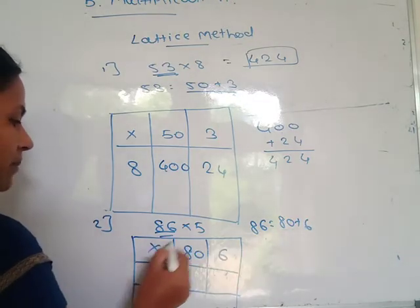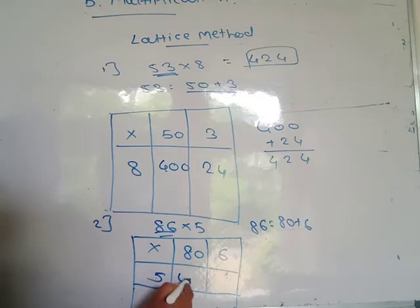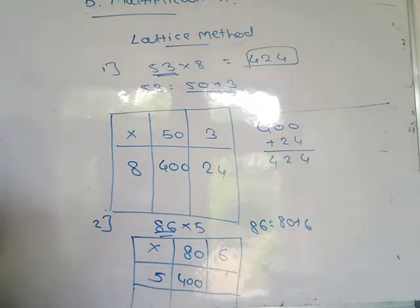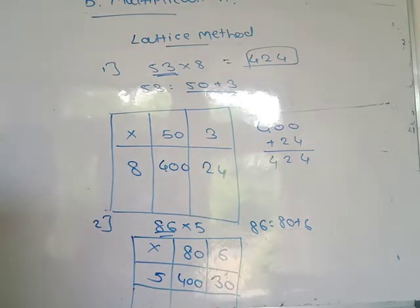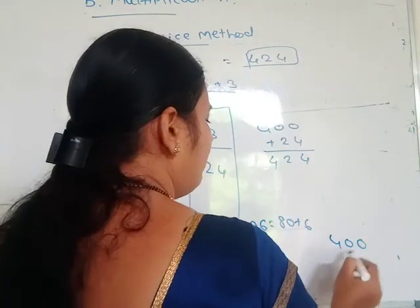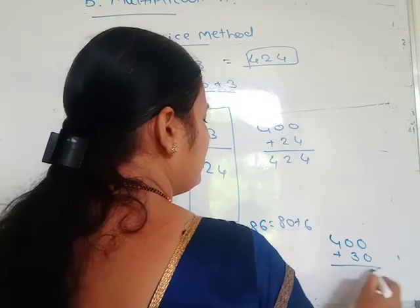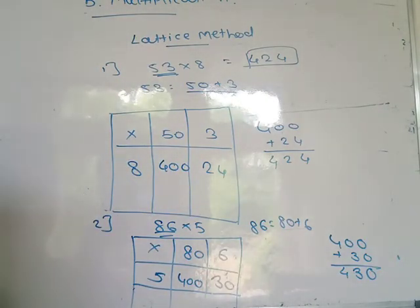Write 80 here, 6 here, then multiplication, and write 5. Then 5 multiplied by 80 — 5 eights are 40, so 400. Plus 5 into 6 — 5 sixes are 30. Then you write the answer 30. Then you do the addition of these two numbers: 400 plus 30. The answer is 430.